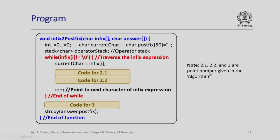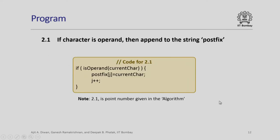These are point numbers given in our algorithm so you can easily identify what logic to implement at each point. The code for 2.1 — when the character is an operand — we need to append it to the postfix string. Very simple: if is_operand, then postfix[j] = current_char, j++. The variable j increments only when something is appended to the postfix string, independent of other variables.